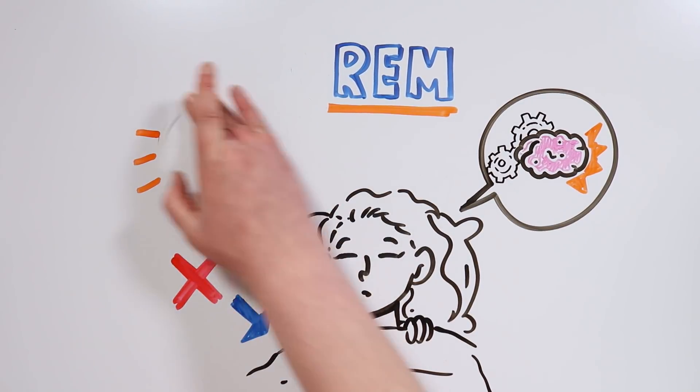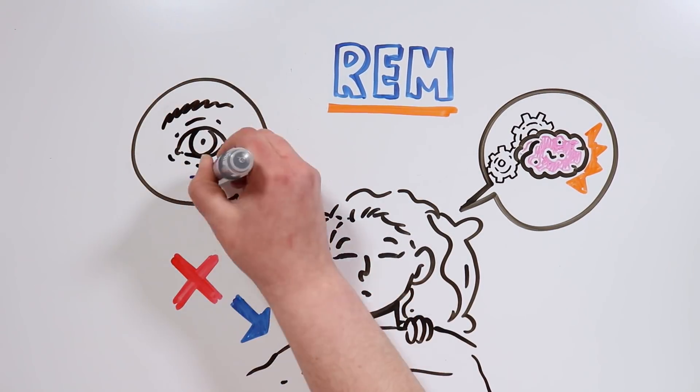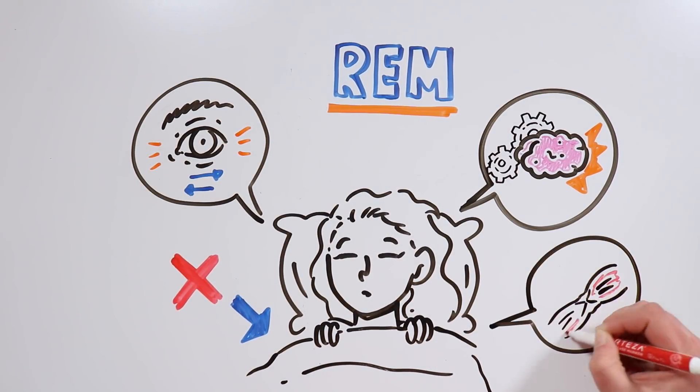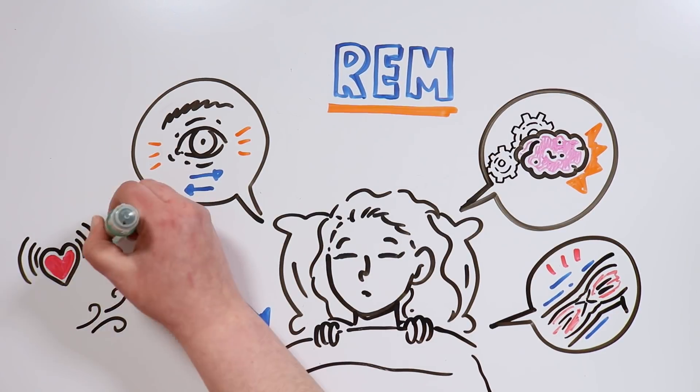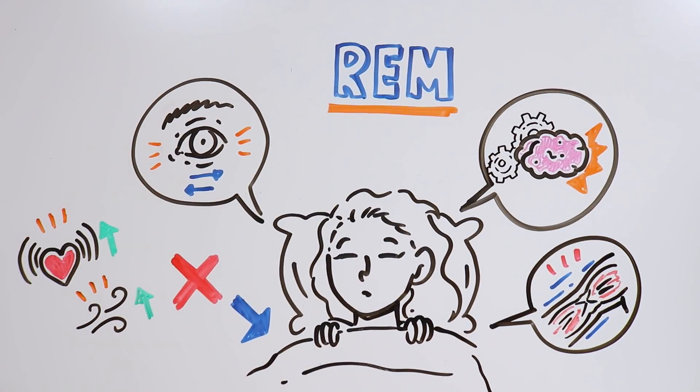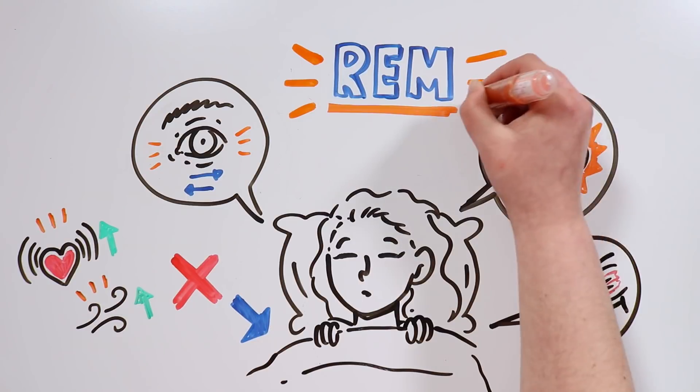However, this doesn't happen to the rest of the body. Although our eyes do move, our muscles become completely paralyzed. Our breathing and heart rate also accelerate, and as the night goes on, the REM phases last longer.